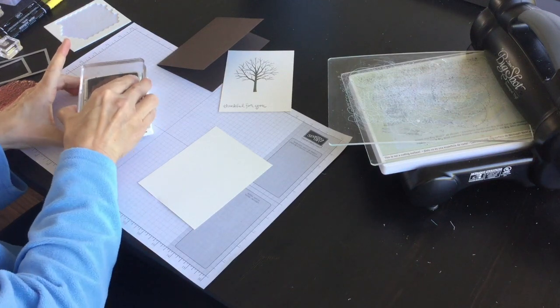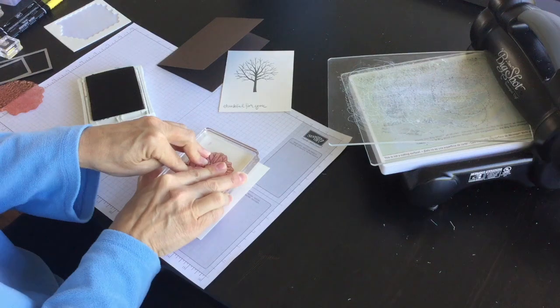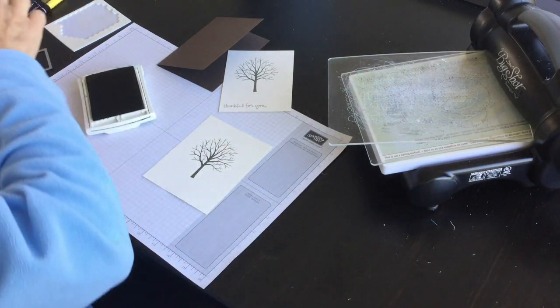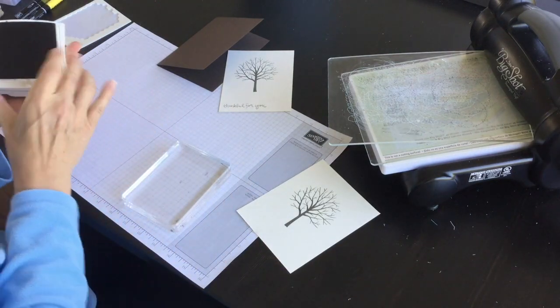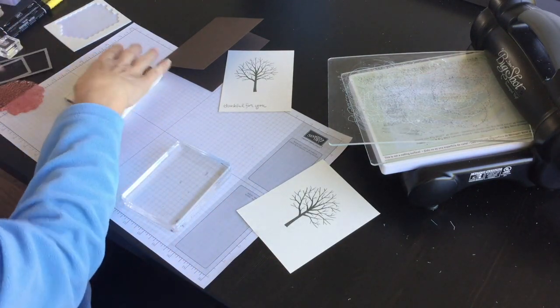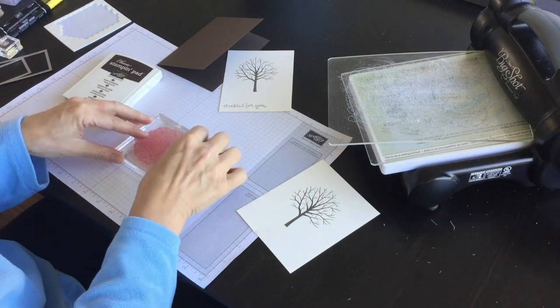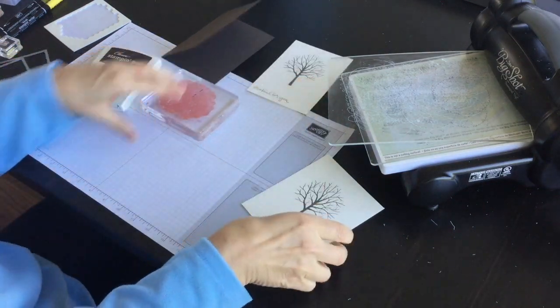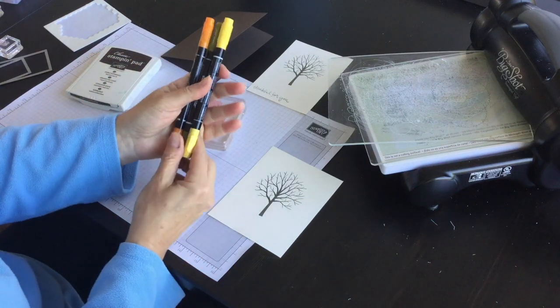And then I'm just going to peel off that stamp for now and then I'm going to bring in the leaf image from the stamp set and I'm going to bring in three stamp and write markers.